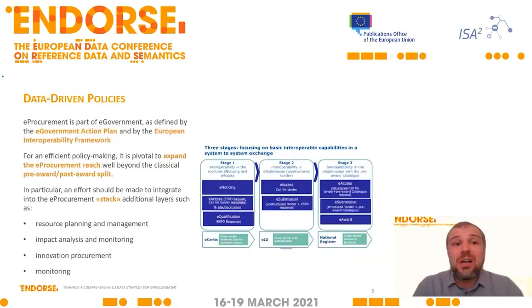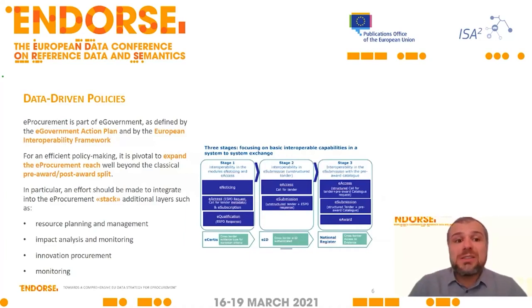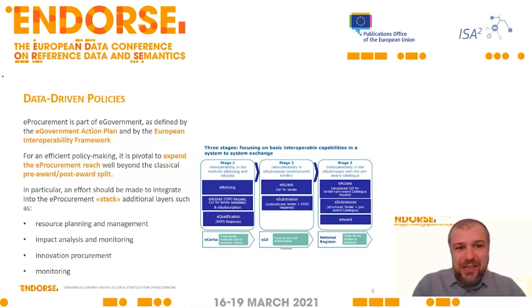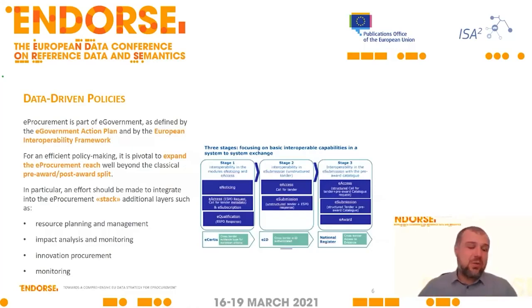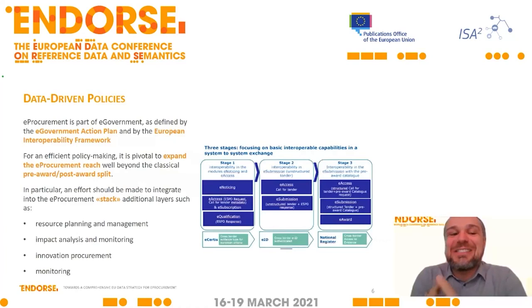Then, semantic interoperability also allows data-driven policies. That's why the European Commission and EU institutions in general are insisting so much on interoperability — it's pivotal to be able to make decisions and to assess the impact of those decisions. What I perceive today regarding e-procurement is that the part of procurement that is formalized is still quite narrow. We need to add additional layers: resource planning, impact analysis, monitoring, and innovation. These parts are not usually included in what we mean by e-procurement today, because we have formalities in place for only a limited set of pre-award phases and a limited set of post-award phases. So we need to expand well beyond what is available today.